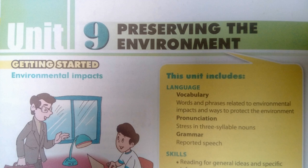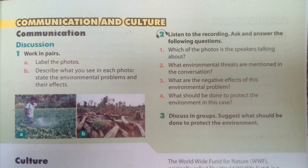Unit 9, Page 45. Communication and Culture Activity 2: Listen to the recording, ask and answer the following questions. What can you see in this photo? Forest trees are being cut down. What do you call this environmental threat? Well, it's deforestation. What are the effects of deforestation? It can lead to a series of environmental problems such as climate change, global warming and extreme floods. What should we do to prevent deforestation? We should control deforestation and have appropriate forestation plans to replace the trees cut down.